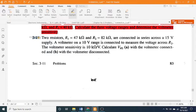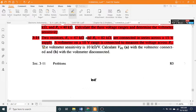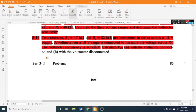3-14: Two resistors, R₁ = 47 kΩ and R₂ = 82 kΩ, are connected in series across a 15 V supply. A voltmeter on a 10 V range is connected to measure the voltage across R₂. The voltmeter sensitivity is 10 kΩ/V. Calculate V₂ (a) with the voltmeter connected and (b) with the voltmeter disconnected.